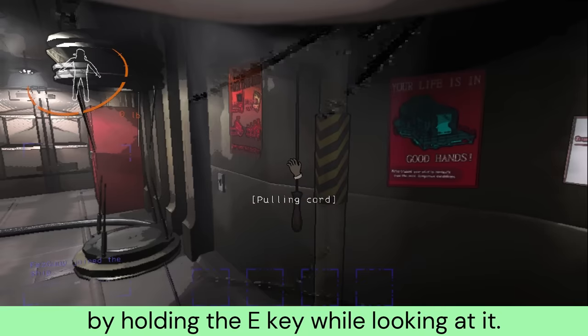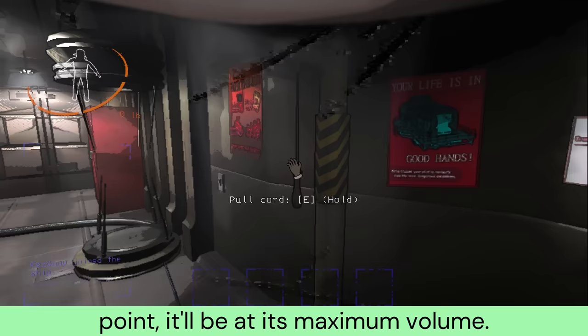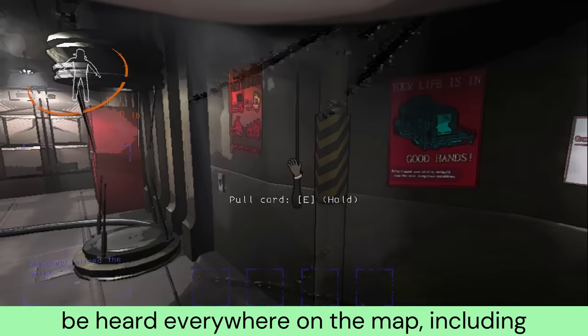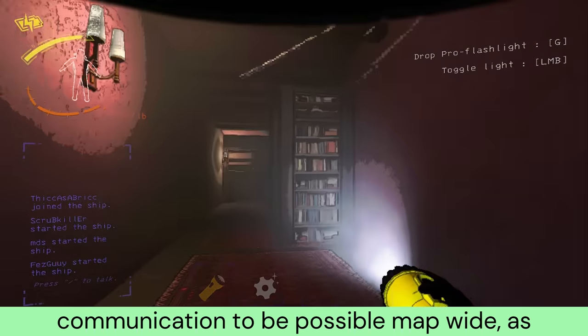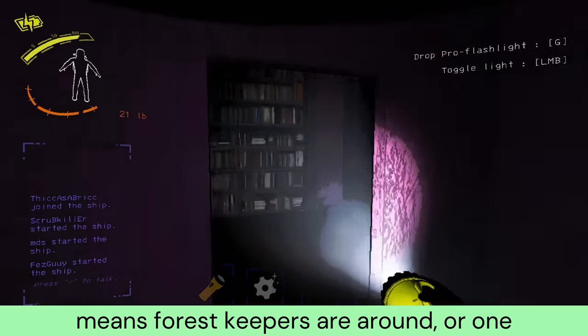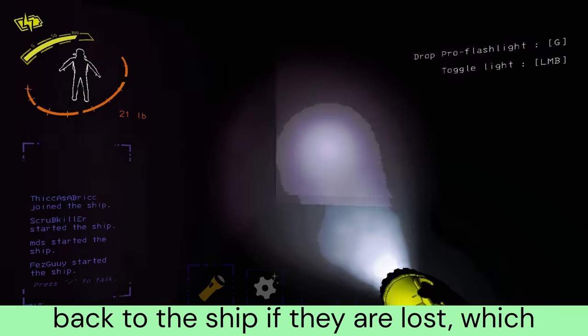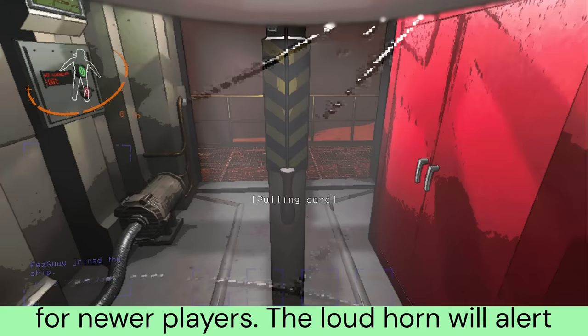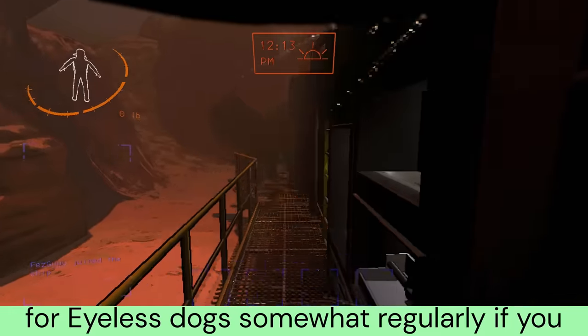Moving on to ship upgrades, the loud horn starts us off. It is currently the cheapest ship upgrade at only $150. The horn can be used by pulling its cord by holding the E key while looking at it. The deep bellowing sound it produces can be heard everywhere on the map, including inside complexes. This can allow for a form of non-verbal communication to be possible map-wide, as you and your crew can define certain horn patterns to mean different things. The loud horn will alert eyeless dogs, which can screw over the whole crew, so be conscious of the time.